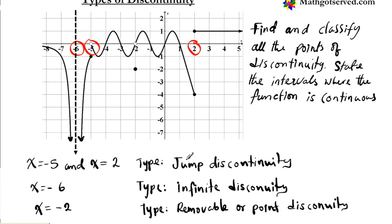Quick recap: Jump discontinuity involves a jump in the graph without any asymptotes on either side — the functions must be approaching a finite value. Infinite discontinuity is whenever you have an asymptote, regardless of whether it is on the left side or the right side. Removable discontinuity is when we have just a point break on the graph that can be filled by placing a point to make the graph continuous.